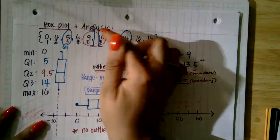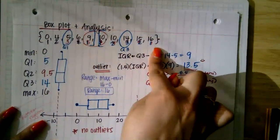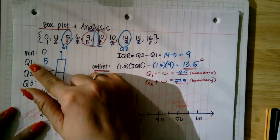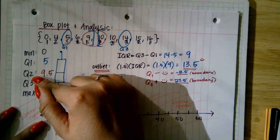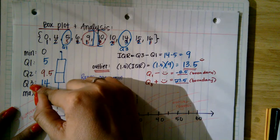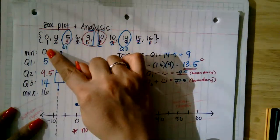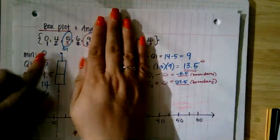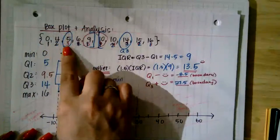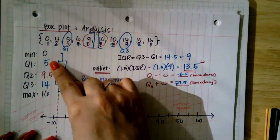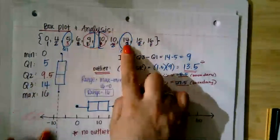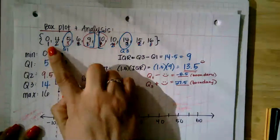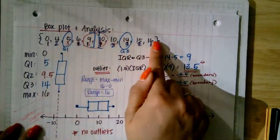I separated the data set into two halves. For the first half, counting to the middle gives five as the center value — that's Q1, the 25th percentile. For the second half, counting to the middle gives 14 — that's Q3, the 75th percentile. Minimum is zero (0th percentile), maximum is 16 (100th percentile). This data set must be in order for this analysis to work.